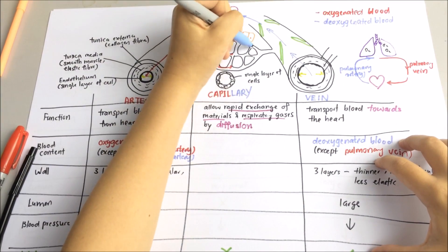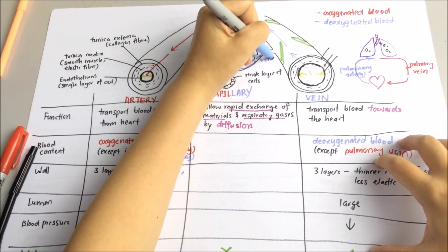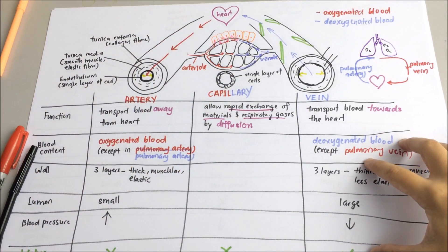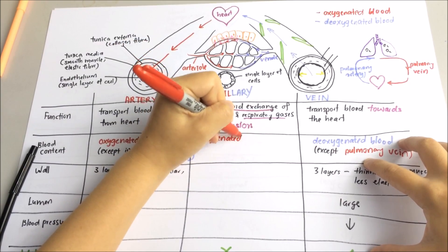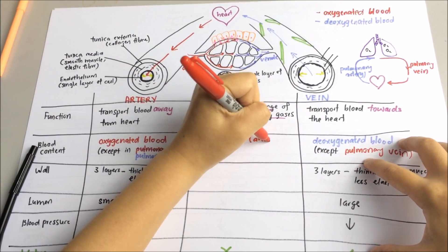On the other end, there are venules. Venules are tiny blood vessels that drain the deoxygenated blood into the vein.